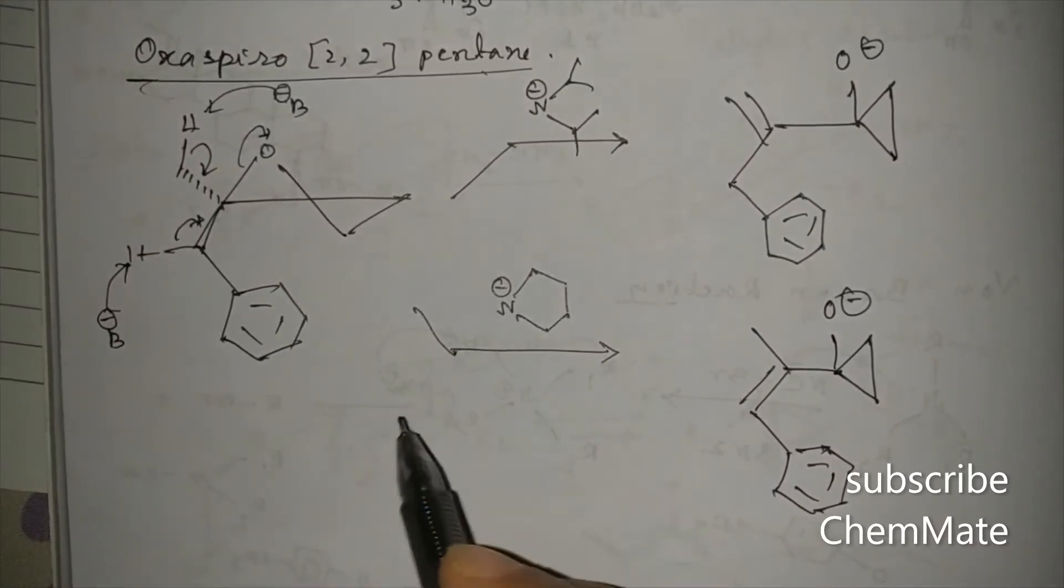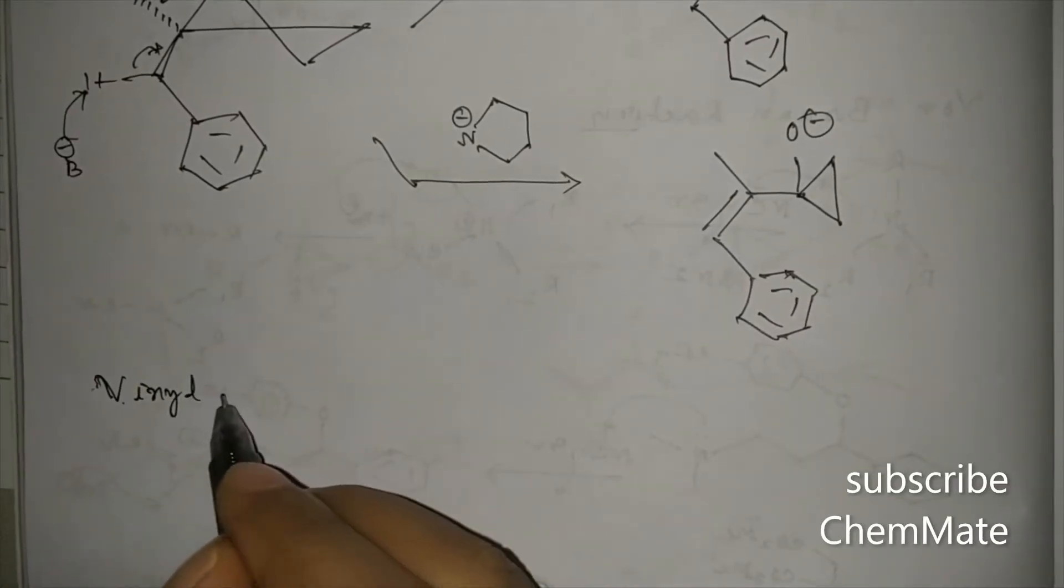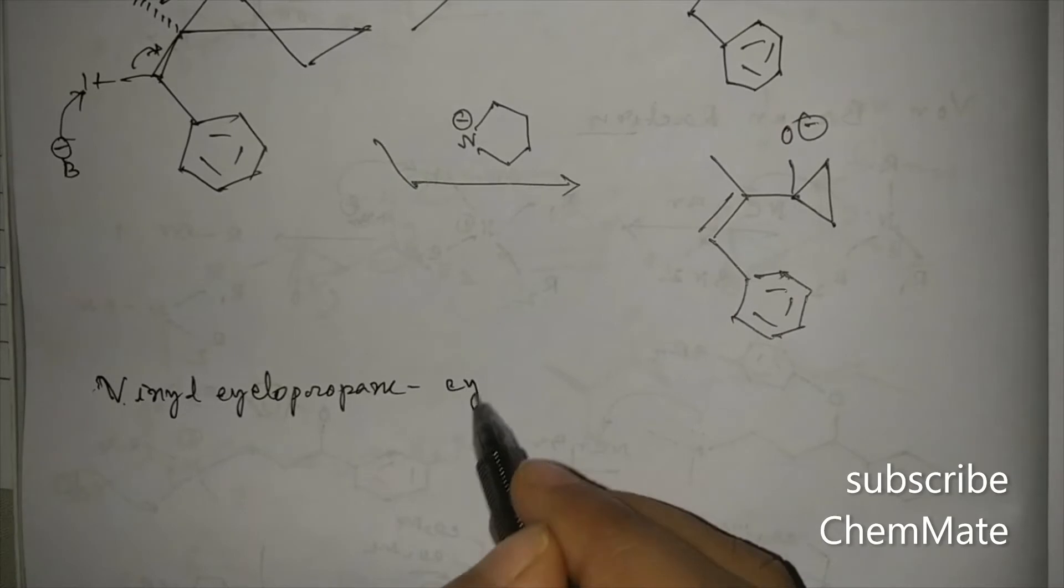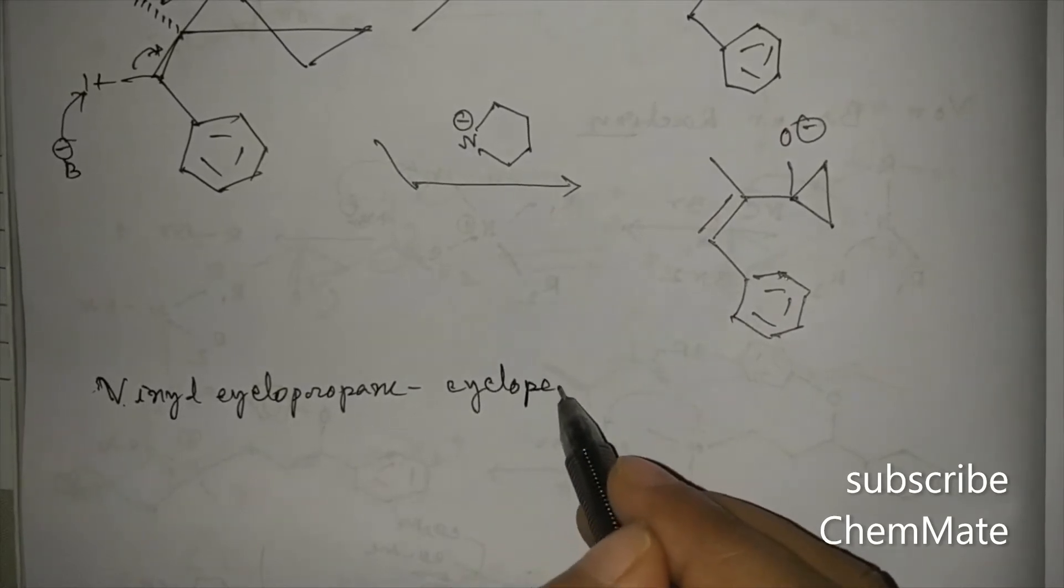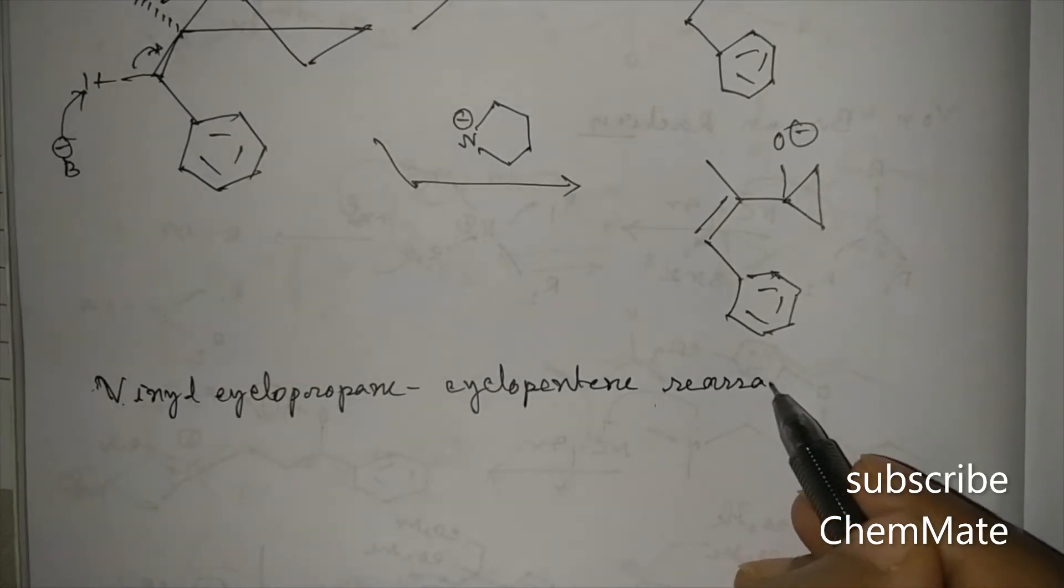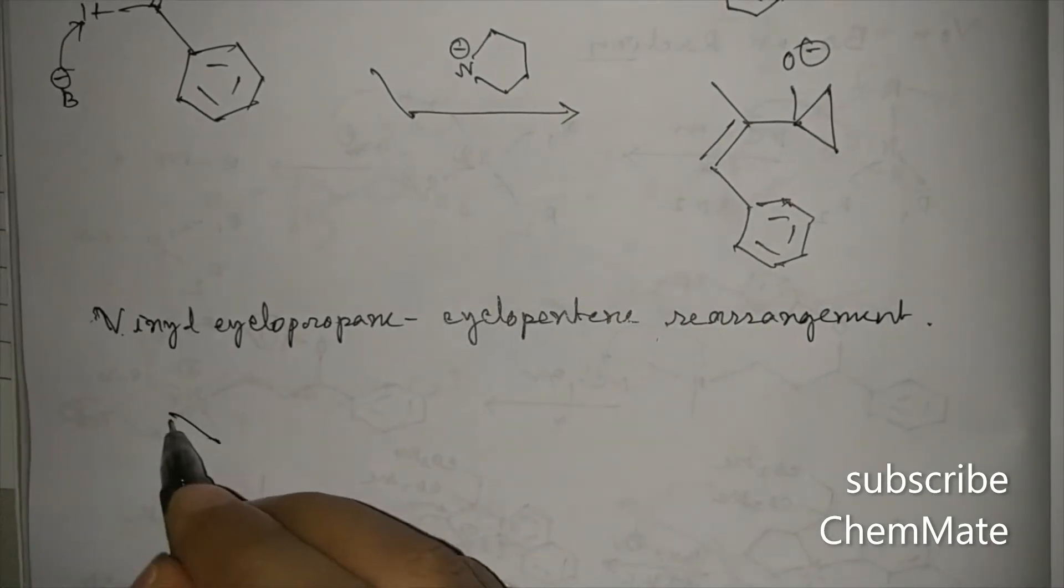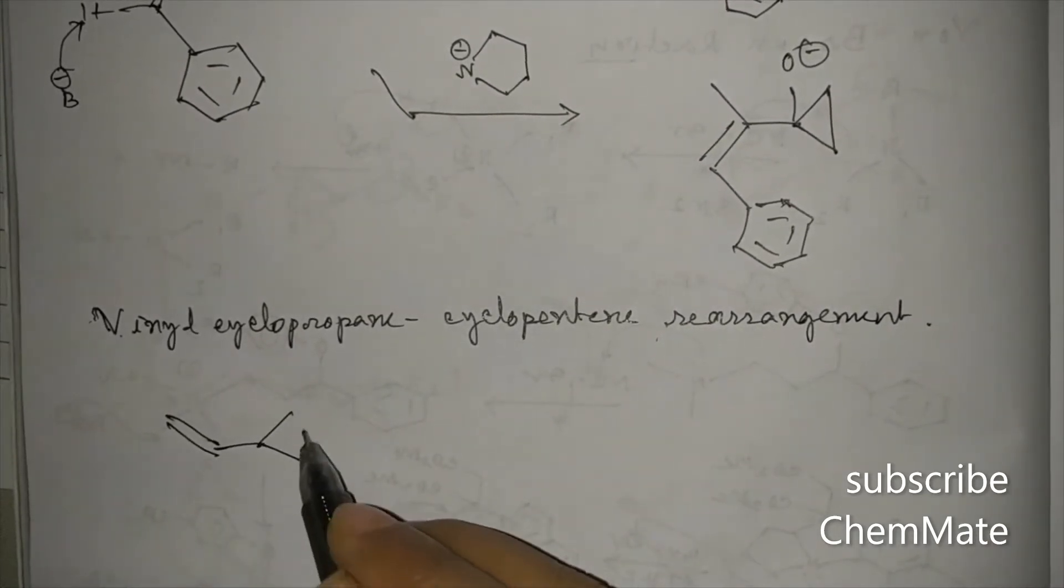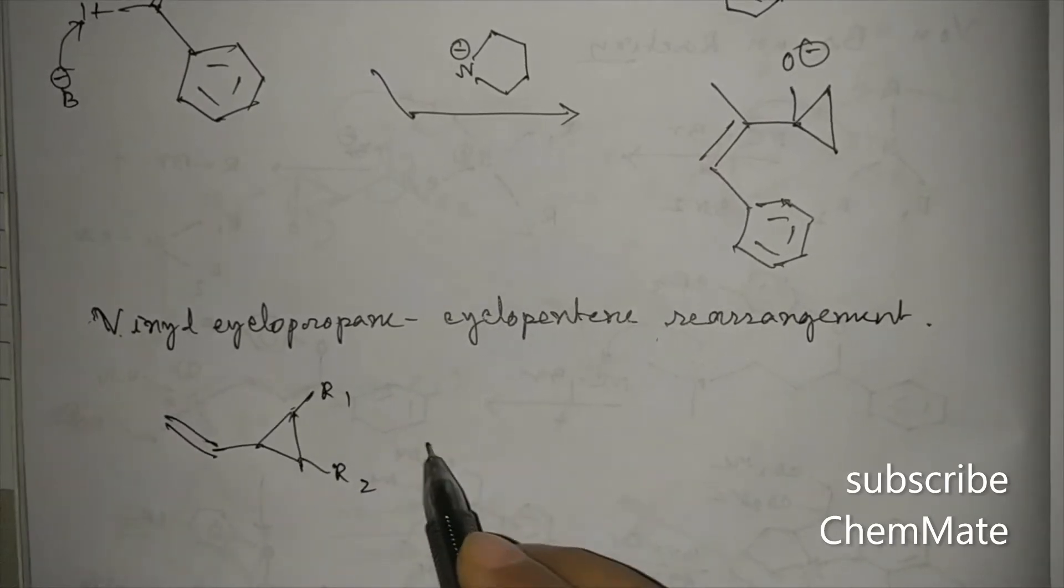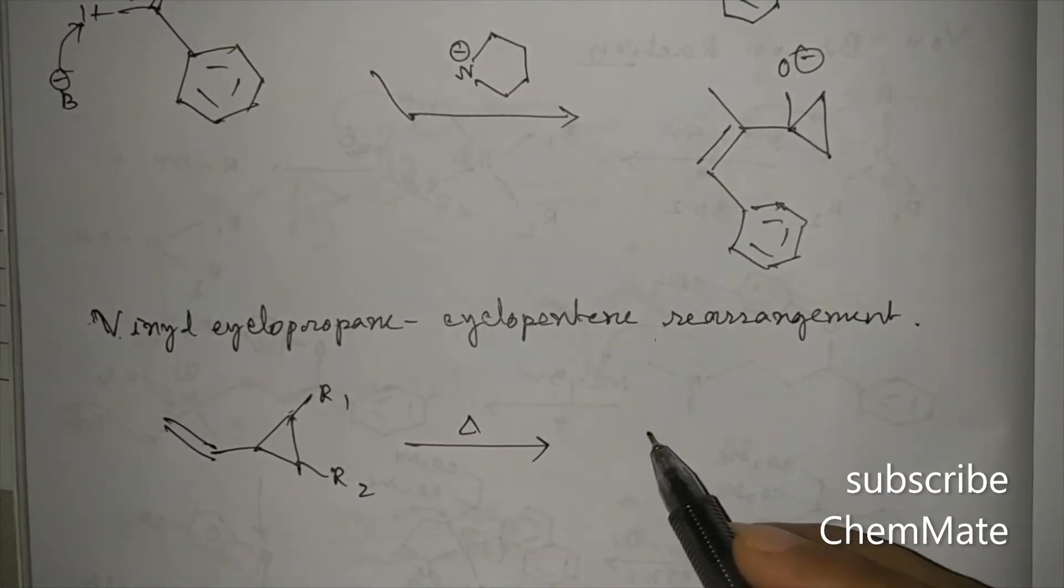You have to know another reaction, that is the vinyl cyclopropane-cyclopentene rearrangement. So what is this reaction? This is the vinyl cyclopropane. Let's say two groups are there. If it is heated, then it will rearrange to a cyclopentene derivative